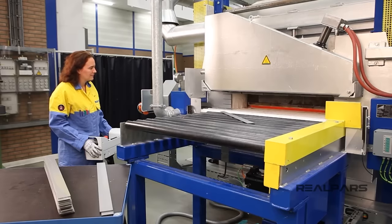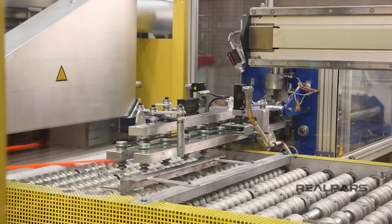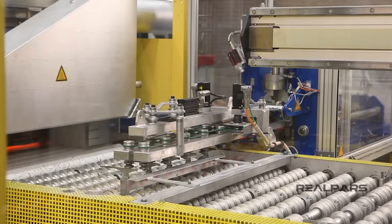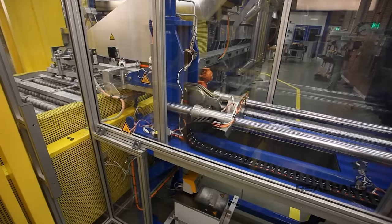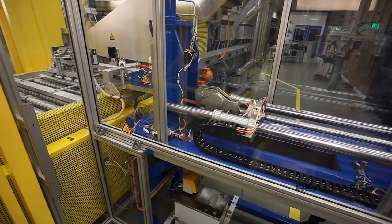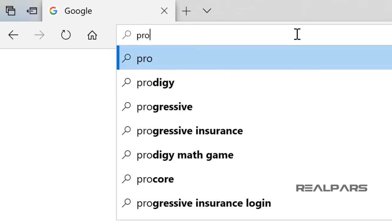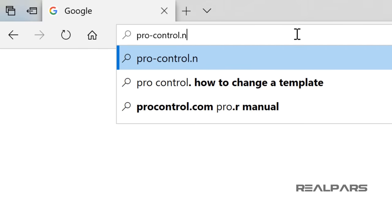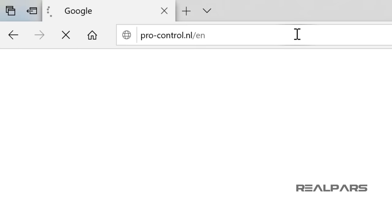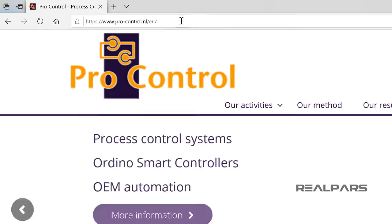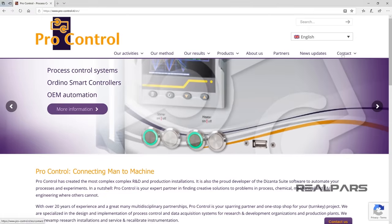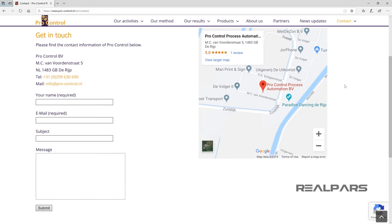They have a team of world-class automation engineers and have been designing and implementing industrial control systems in different industries for many years. If you want to get in contact with them, you can check out their website at pro-control.nl. That's pro-control.nl. We'll put a link to their website in the description below the video as well.